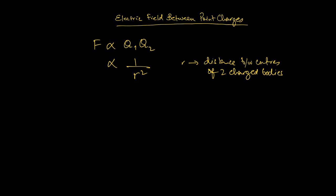This leads us to something we call Coulomb's law, which is written as Q1 times Q2 divided by R squared — force is proportional to this expression. When you write out the equation, there's going to be a constant in front of it — a constant of proportionality — which we express as one over four pi epsilon naught, times Q1 Q2 over R squared.